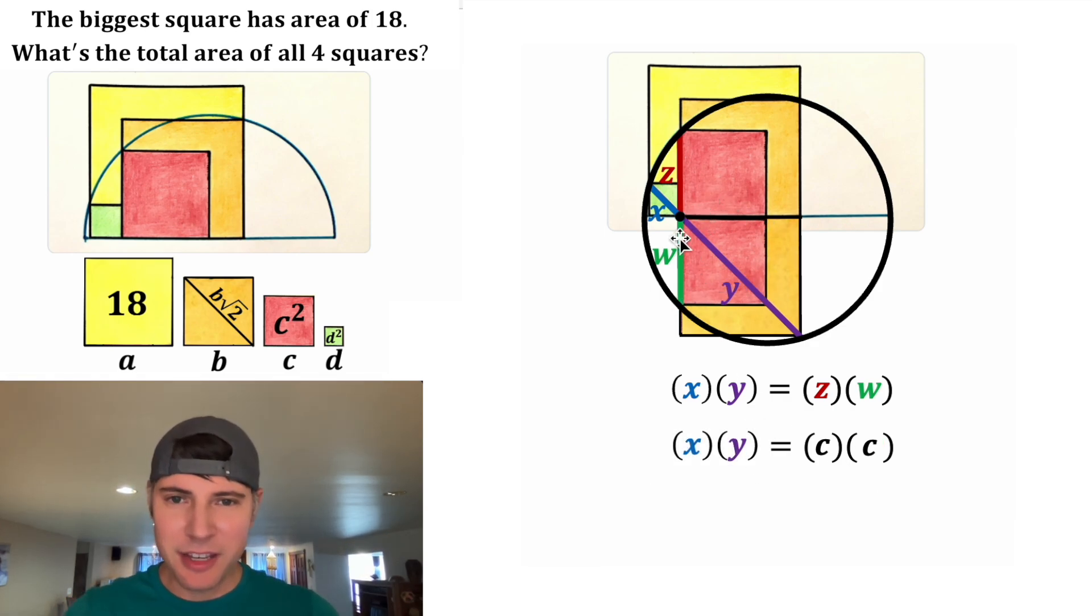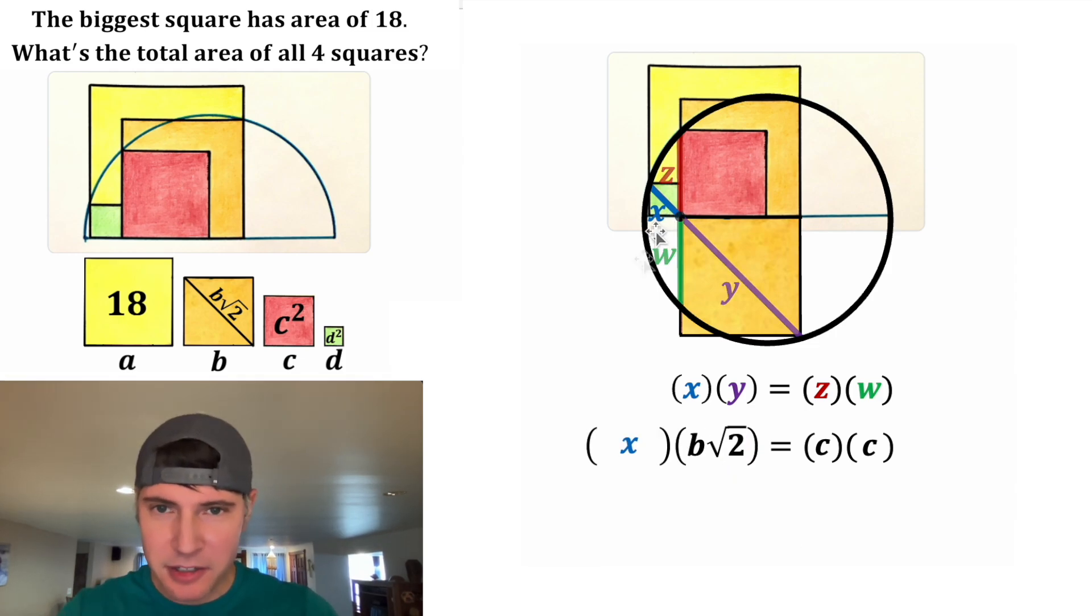And then for the X and the Y, these are diagonals of the squares. So for the Y, let's get rid of the red square. The Y is the diagonal of this orange square. And we discovered earlier that the diagonal of the orange square is equal to B root 2. So in the place of this Y, let's plug in B root 2. And then the X up here, let's get rid of this other stuff. The X is the diagonal of the green square. And that would be equal to D root 2. So we can change this X into D root 2.